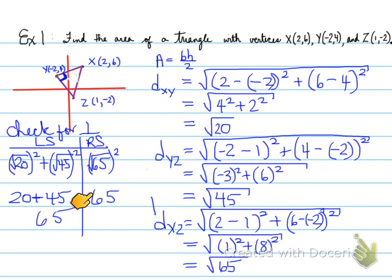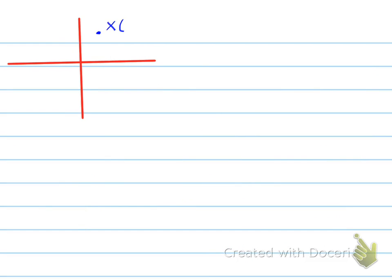So back to this. We found out that it was a right-angled triangle. Because of that, we know one side can be considered the base, and the other side can be considered our height. So let's move on and find the base and height, the length of the base and height of the triangle.